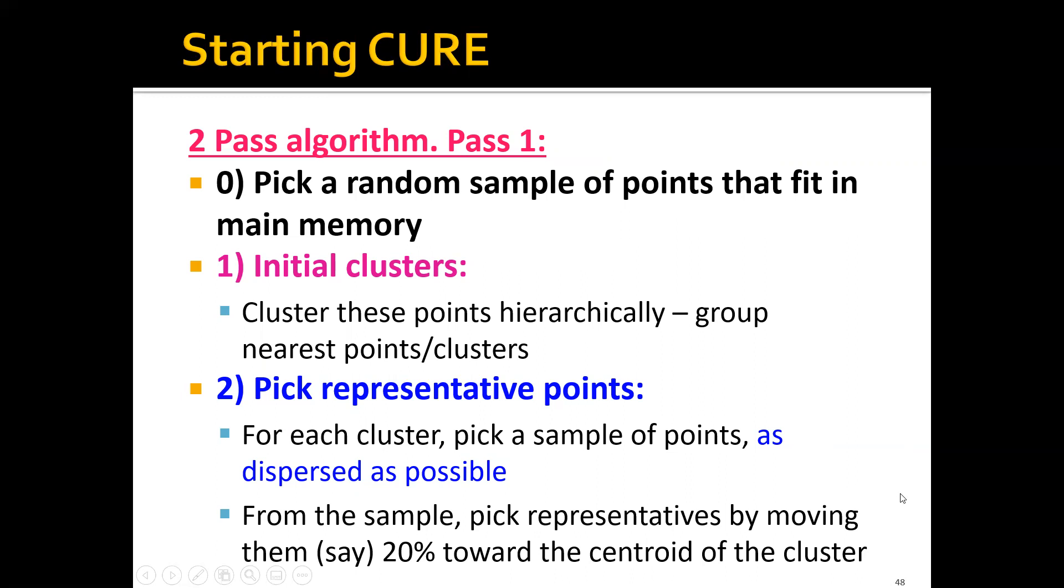From the samples we pick, we can then pick the representatives by moving them, for example, 20% towards the center of the cluster. So the representatives are actually not the original points, but synthetic points that we created that are closer to the center.